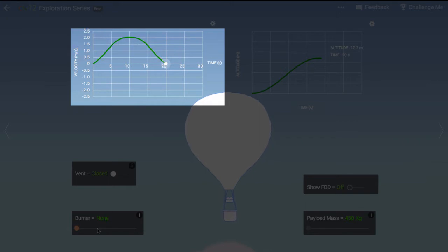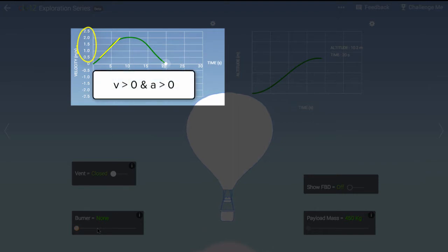As you may know, when velocity and acceleration are in the same direction, an object speeds up. When they are in opposite directions, the object slows down.